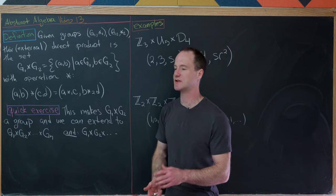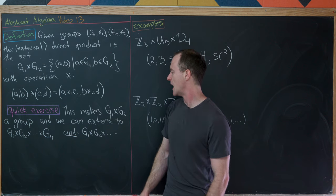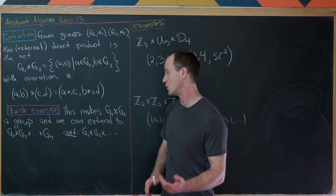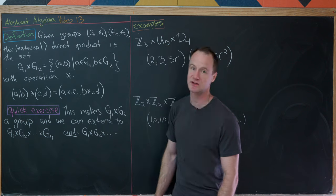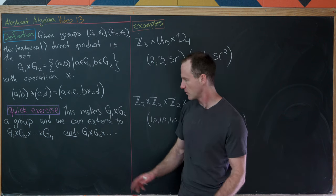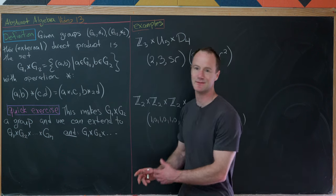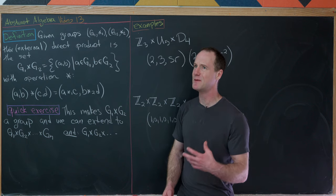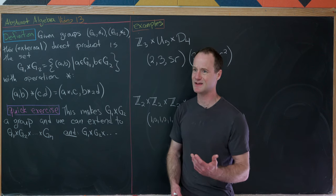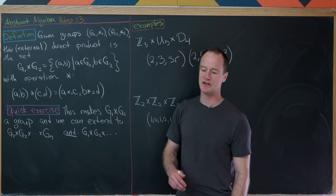A quick exercise, which you could add to the warm-ups at the end, is to check that this makes G1 cross G2 into a group. We can extend it to the direct product of n groups, and even an infinite direct product. You may have noticed we've used simple versions like Z2 cross Z2 or Z2 cross Z3 already — this is just doing it in general.